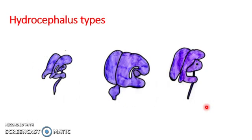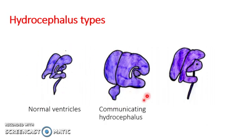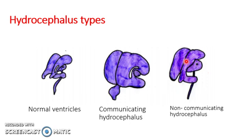Just to show a picture of the types, here's one I drew earlier. Here you've got the normal ventricles. Communicating hydrocephalus — as you can see there's a global dilatation of all four ventricles. And non-communicating, where only the lateral and third ventricles are dilated. We'll discuss the pathophysiology and why they look like this further into the PowerPoint.